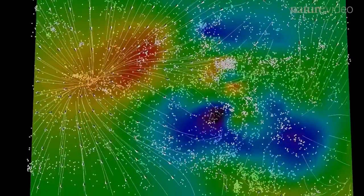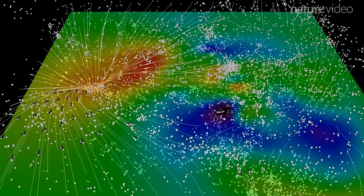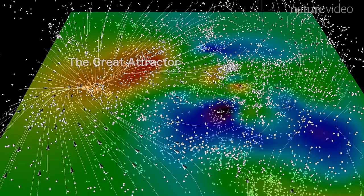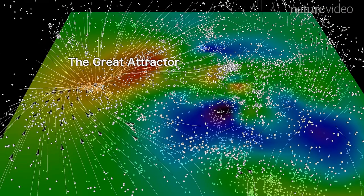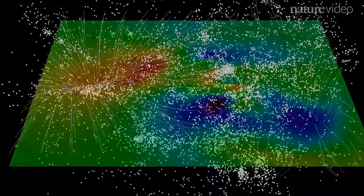Delving into our home supercluster, you can see that most galaxies are being pulled towards a dense center. This is known as the Great Attractor. Our galaxy is among those sliding towards this patch of space, which dominates our region of the universe.